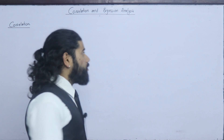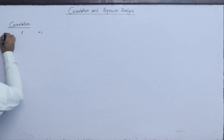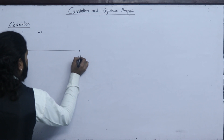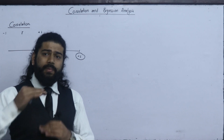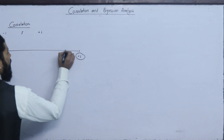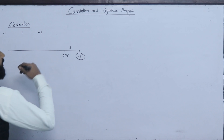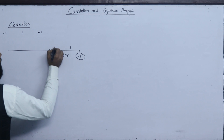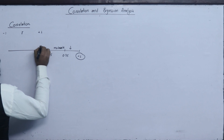Now, what is the R value? R represents a range from plus 1 to minus 1. If R value equals positive 1, that is a perfect positive correlation — x will change and y will change together. From 0.75 to 1 is a high degree positive. From 0.5 to 0.75 is moderate positive. From 0.5 to 0 is low degree positive.